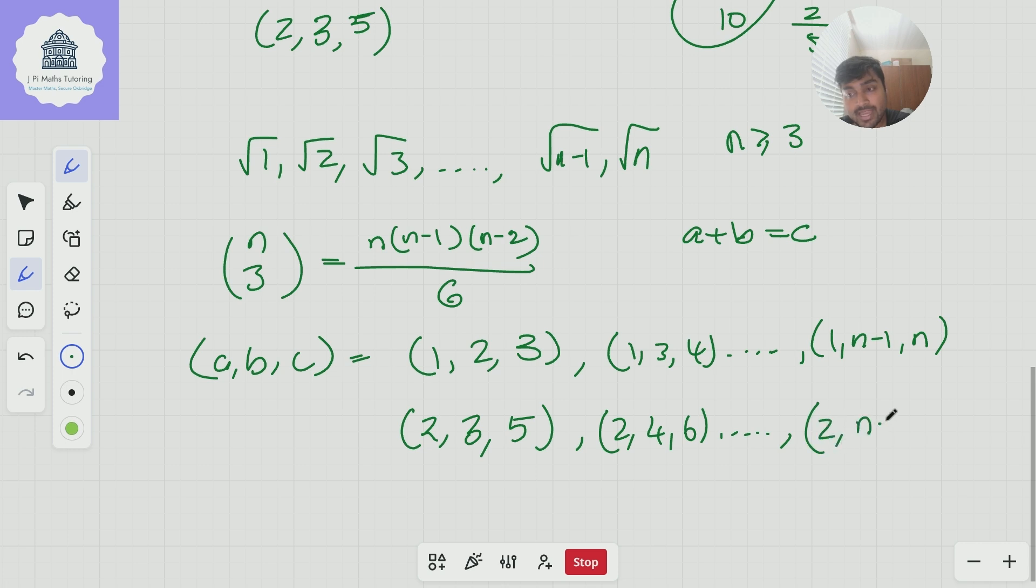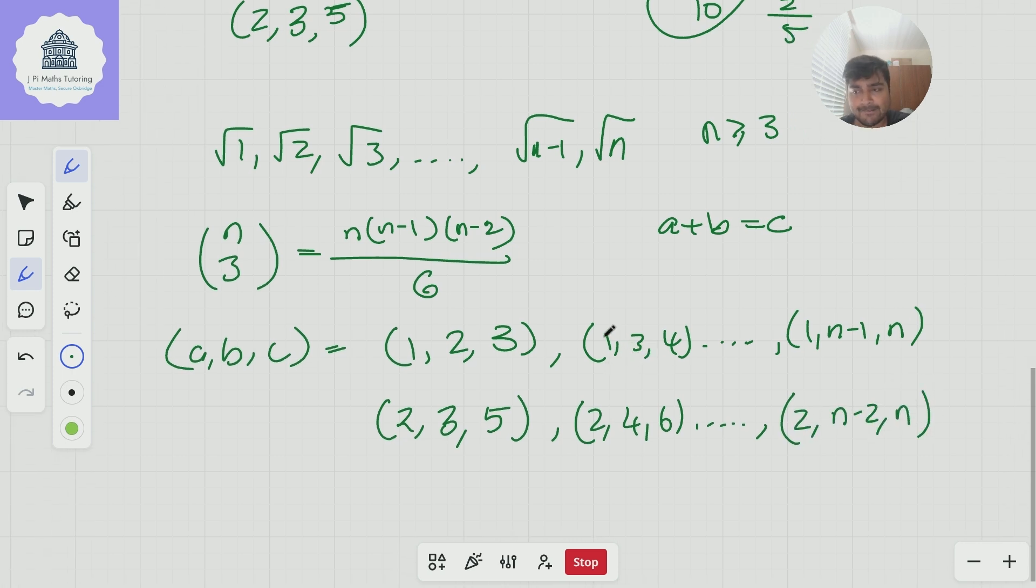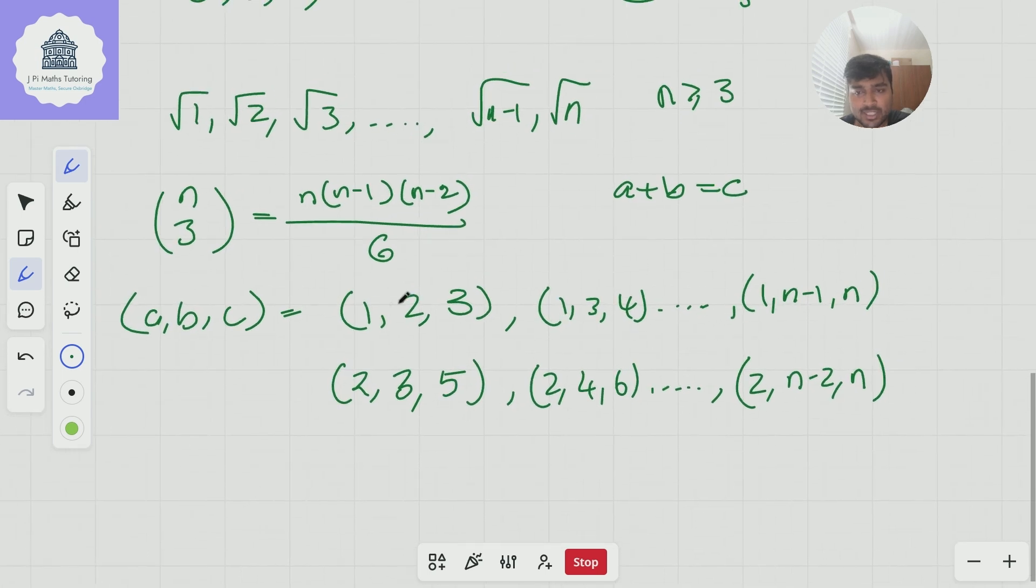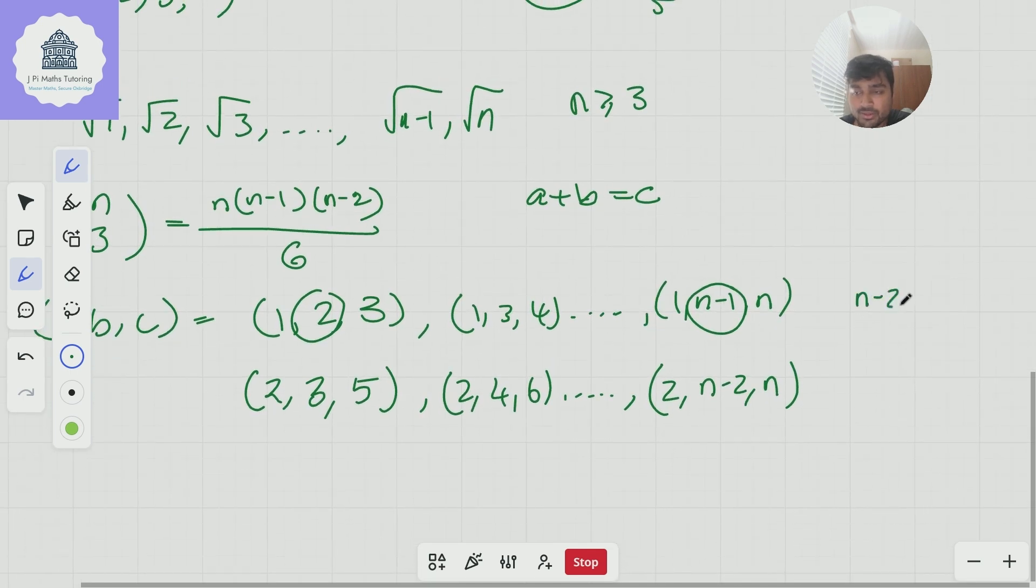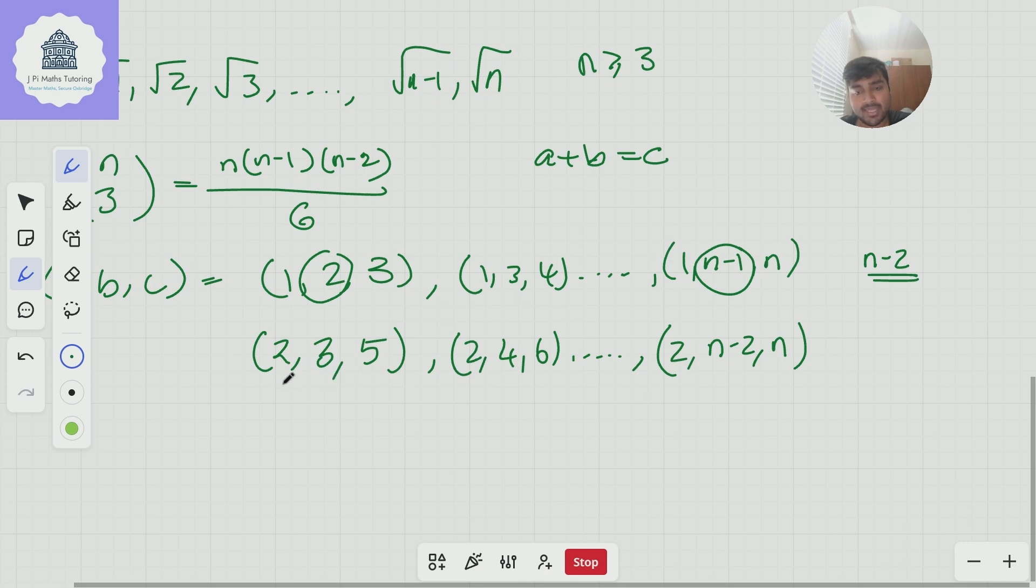Great okay then the next solution would be two three five two four six and so on and I could go up to two n minus two n like so. Now how many solutions are there in this first row? Well notice that we're going from two up to n minus one so there'd be n minus two solutions there. And you can maybe see where we're going with this.